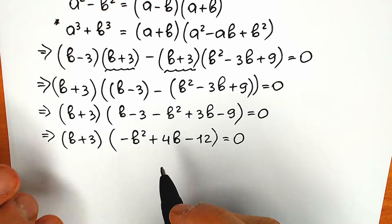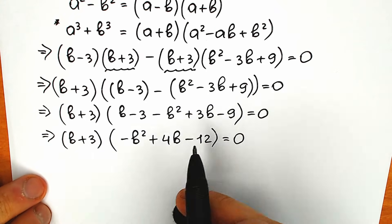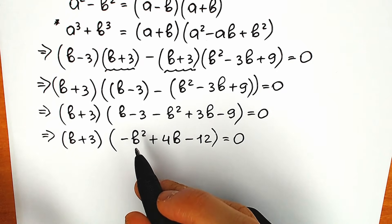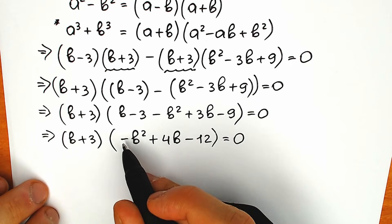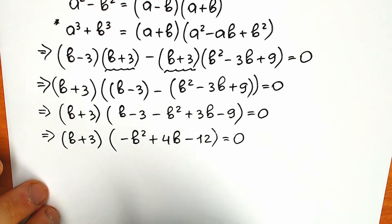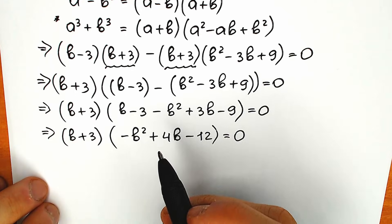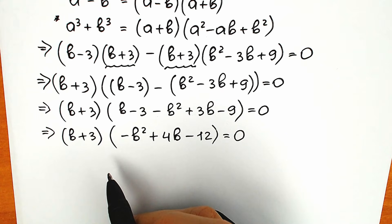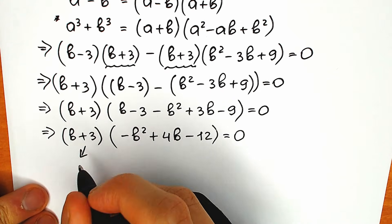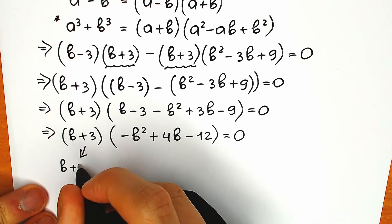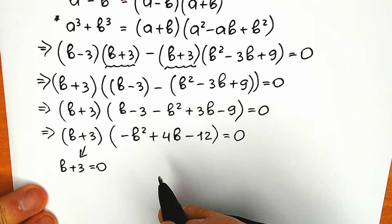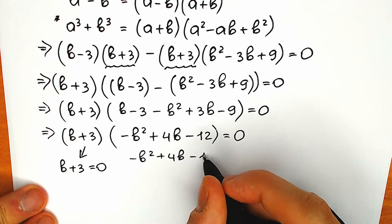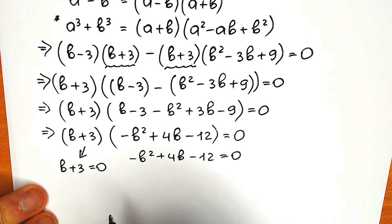I prefer multiplying the second expression by minus one to get a really clean quadratic equation: b squared minus 4b plus 12. Now, a product of two parentheses equals zero when either the first parenthesis equals zero — so b plus 3 equals 0 — or the second parenthesis equals zero: minus b squared plus 4b minus 12 equals 0.